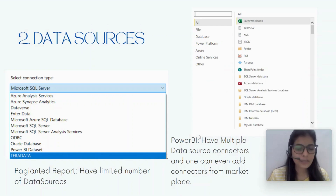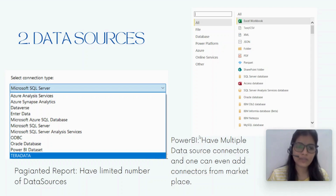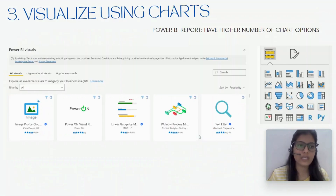Next is data sources. In the case of a paginated report you have a limited number of data sources or connection types, but in the case of Power BI you have a large number of connectors and you can even import different types of connectors.